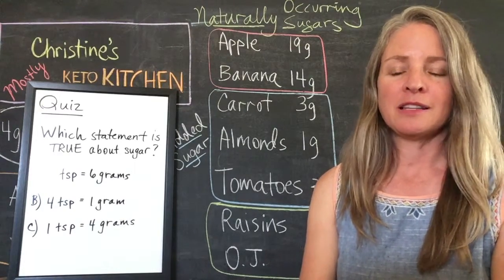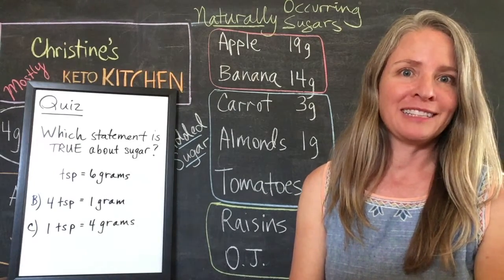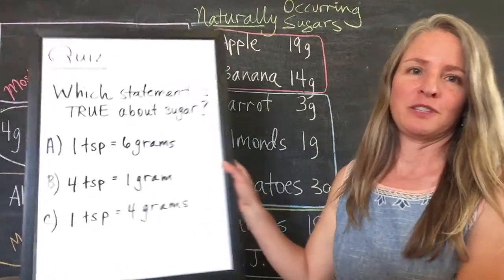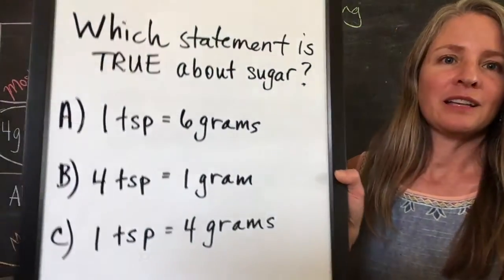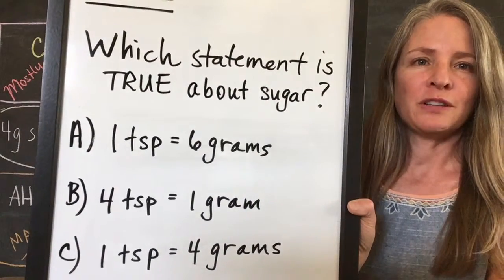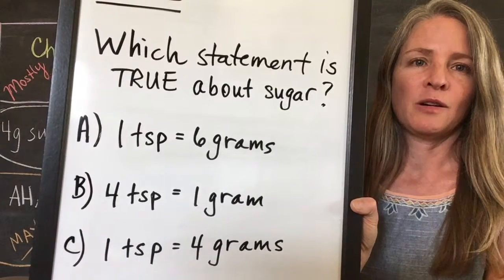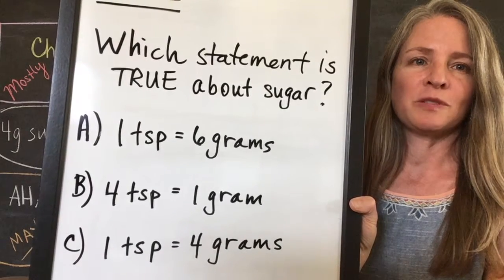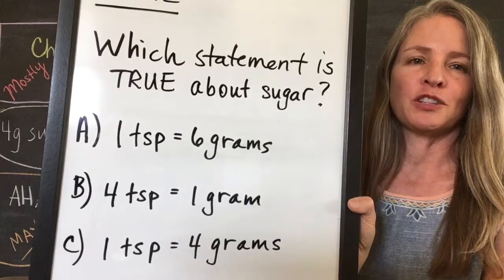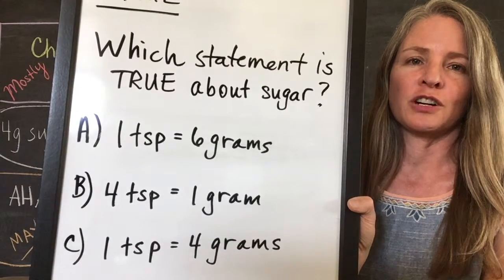I'm super psyched about the stuff that I'm learning. As a former professor, I like to give quizzes, and I do have a quiz for you today. Which of the following statements is true? One teaspoon equals six grams of sugar, four teaspoons equals one gram of sugar, or one teaspoon equals four grams of sugar.